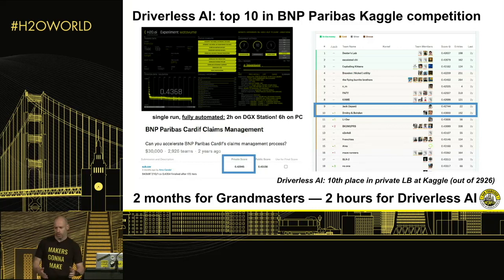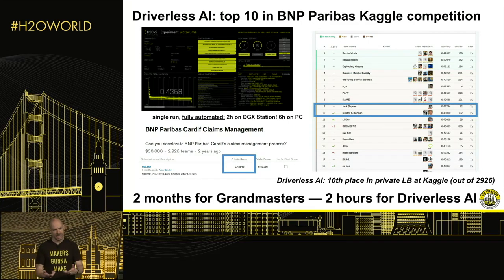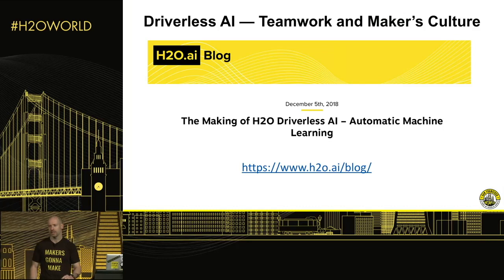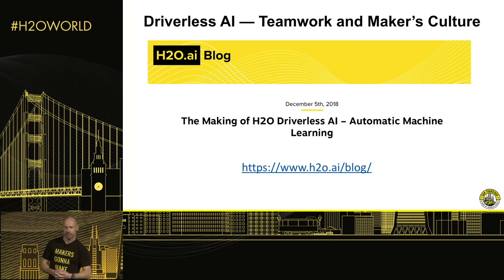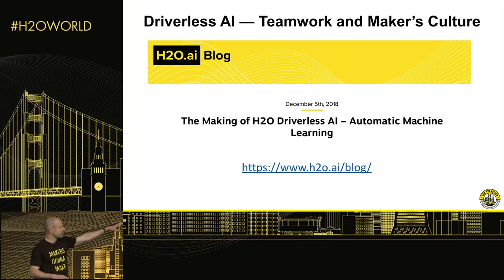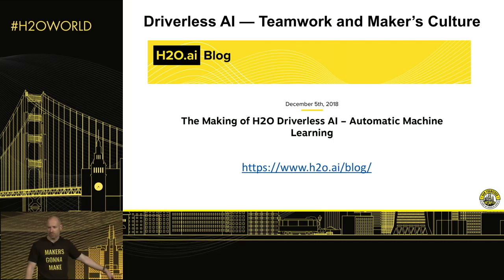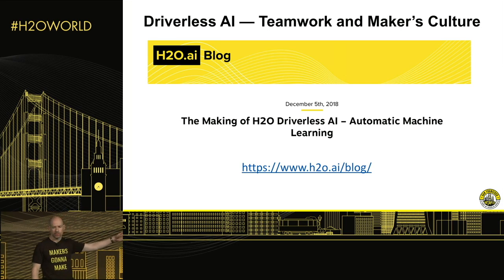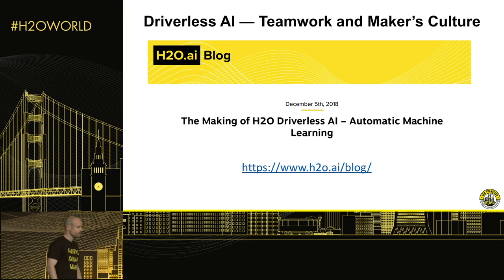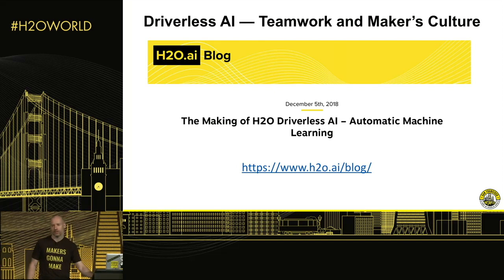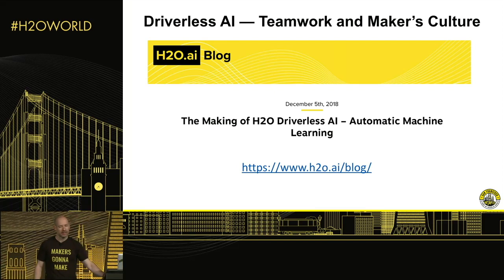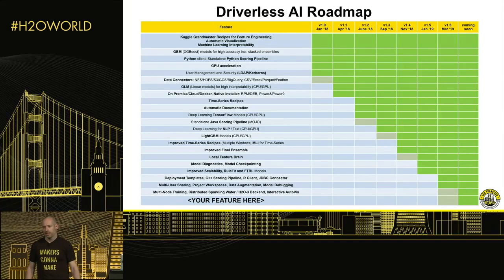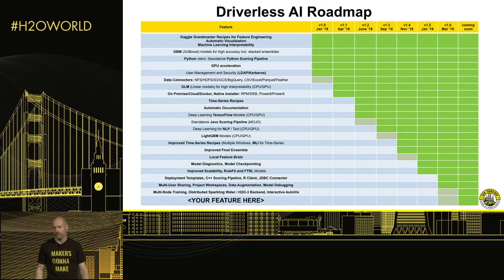When you have categorical and numerical columns and they interact, you can squeeze out information with statistics. This is not just tuning parameters — there's a lot going on inside Driverless. There's a blog I was fortunate enough to write in December. If you're interested in the making of Driverless, go to h2o.ai/blog. A lot of good teamwork going on at H2O, a lot of maker culture, lots of talent. All these features have been built out in just a little over a year.